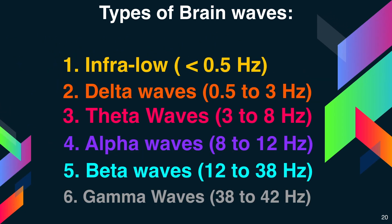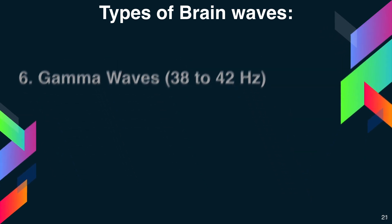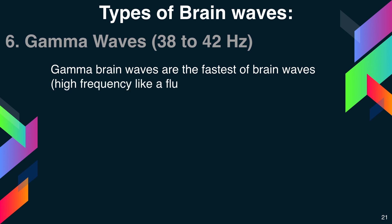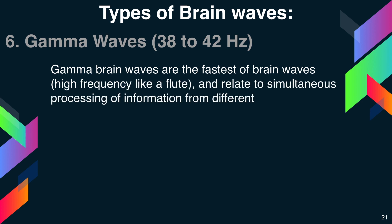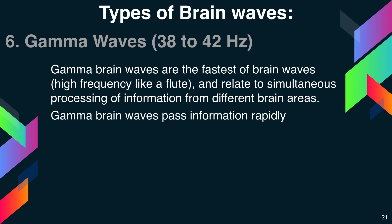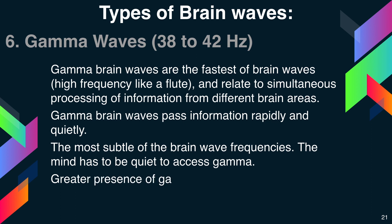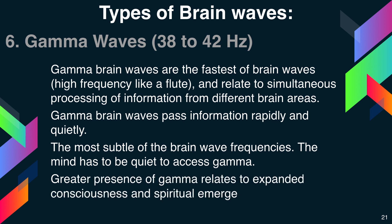The next type is gamma waves, between 38 to 42 hertz. Gamma brain waves are the fastest of brain waves — high frequency, like a fluid — and relate to simultaneous processing of information from different brain areas. Gamma brain waves pass information rapidly and quietly. As the most subtle of the brain wave frequencies, the mind has to be quiet to access gamma waves. Greater presence of gamma relates to expansive consciousness and spiritual emergence.